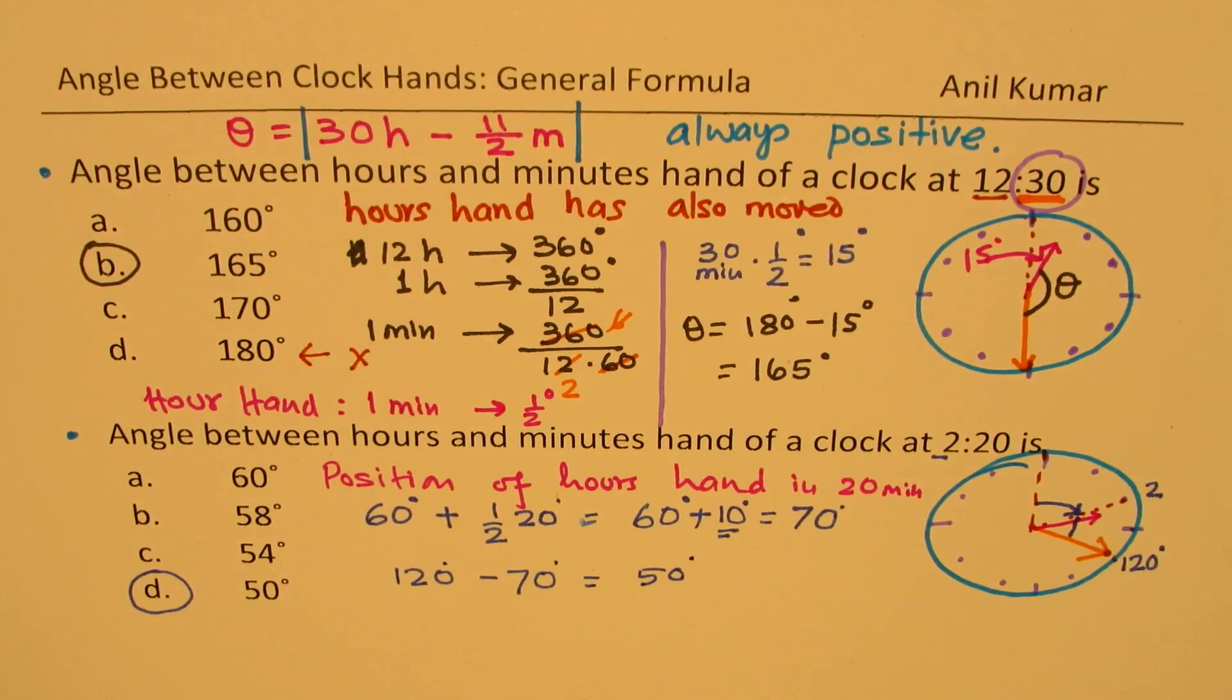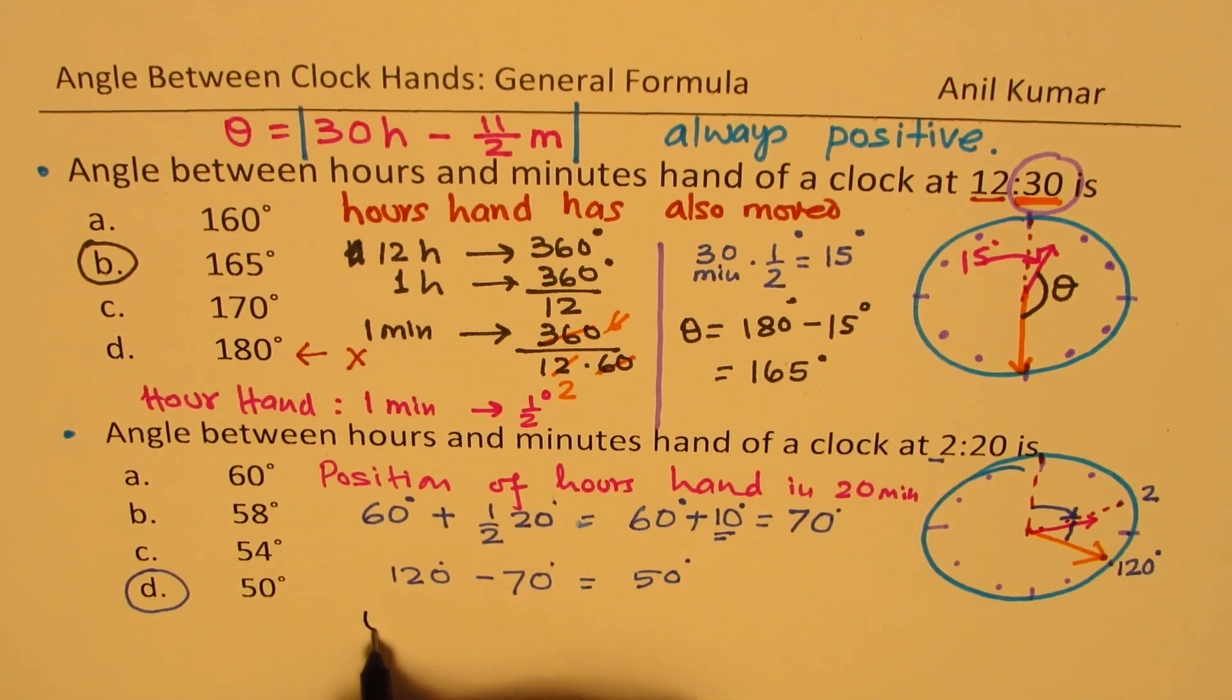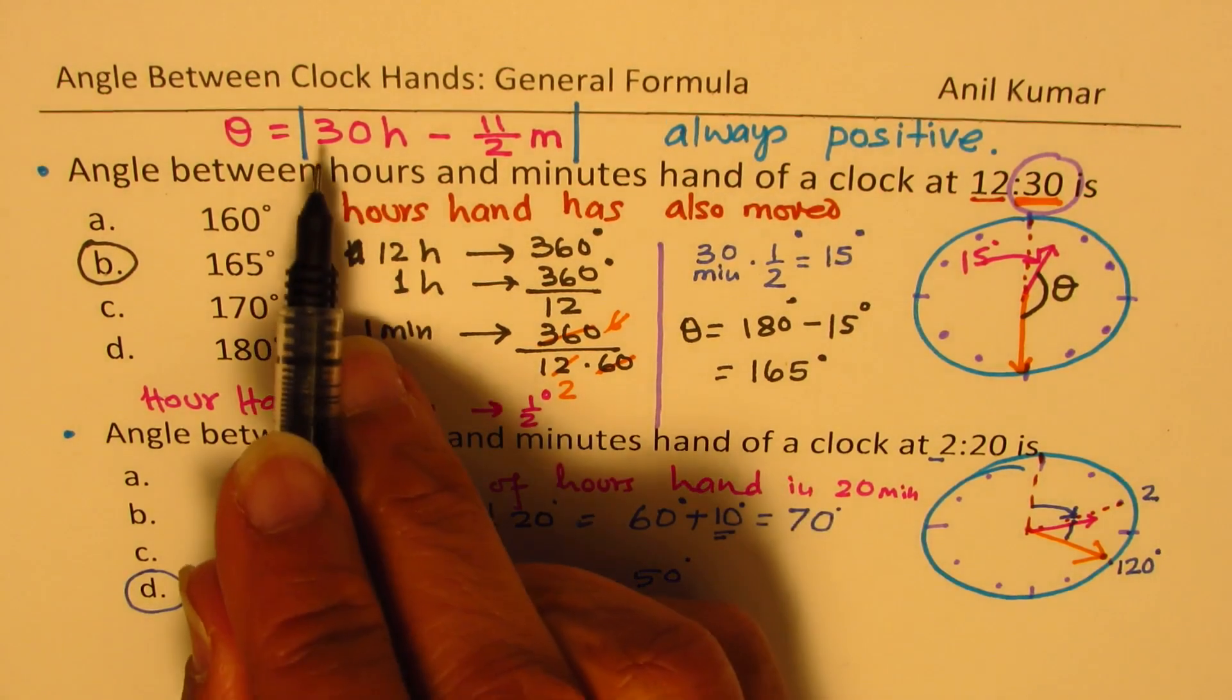You could say 30 and 30 is 60, take away 10 is 50. So you could get this answer like this. Since you move 10 extra. Or you could also say 120 minus 70 is 50. So these are different types of situations or conditions which you could apply.